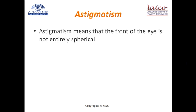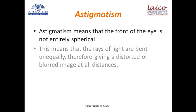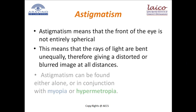Astigmatism means that the front of the eye is not entirely spherical like a soccer ball, but shaped more like a football and not equally curved in all places. This means that the rays of light are bent unequally, therefore giving a distorted or blurred image at all distances. Astigmatism can be found either alone or in conjunction with myopia or hypermetropia.